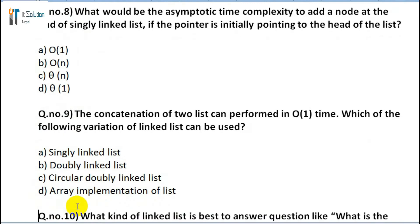Question 9: The concatenation of two lists can be performed in O(1) time. Which of the following variations of linked list can be used? A) Singly linked list, B) Doubly linked list, C) Circular doubly linked list, D) Array implementation of list.